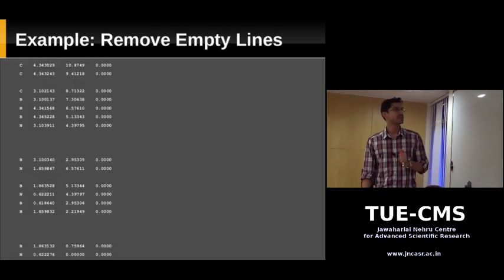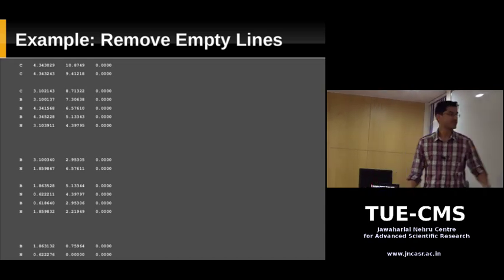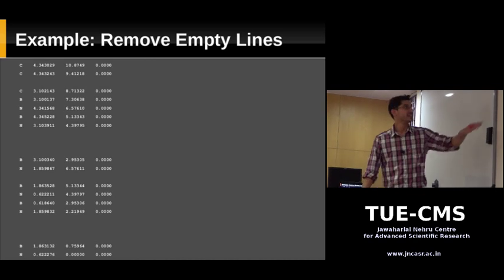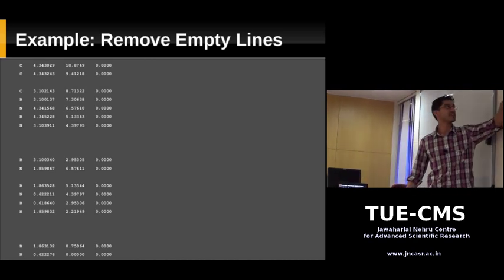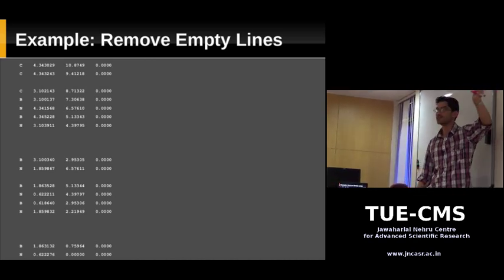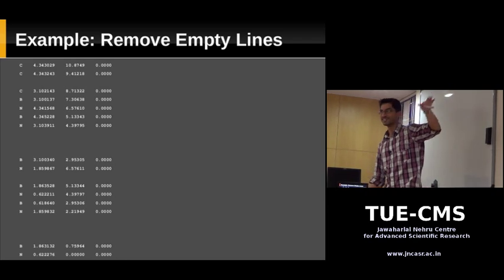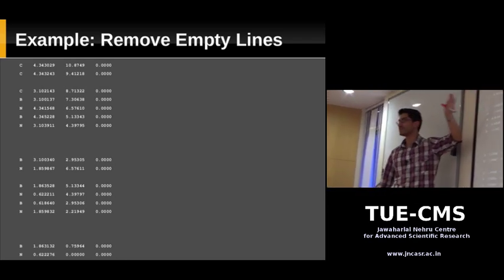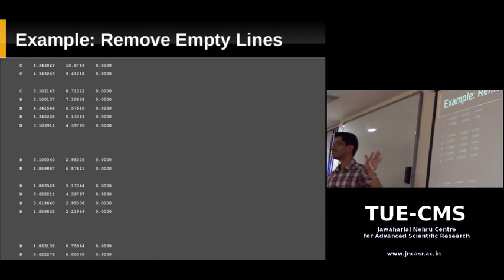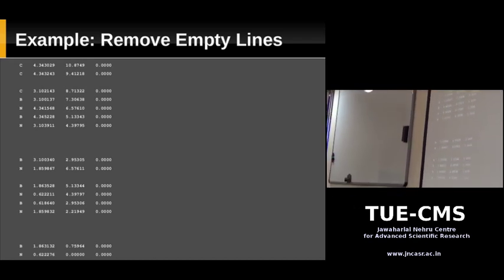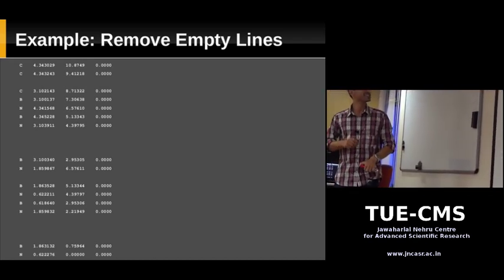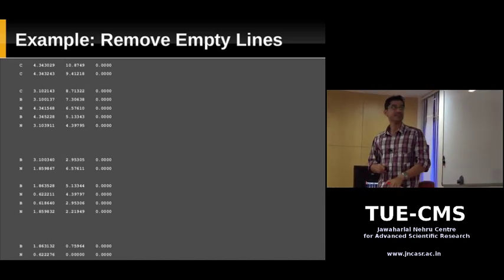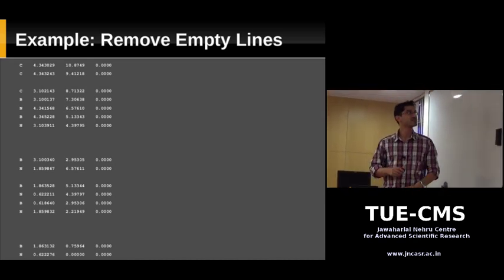The next example uses this input file — it contains lines with an alphabet and three numbers, just data arranged in columns. But there are some blank lines in between the rows.